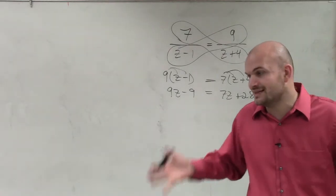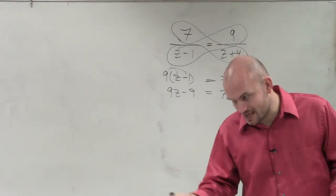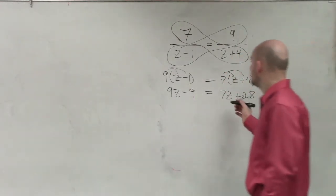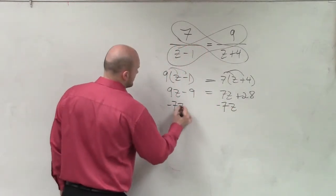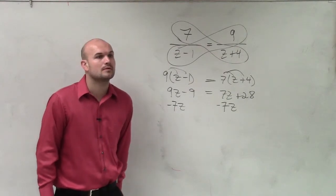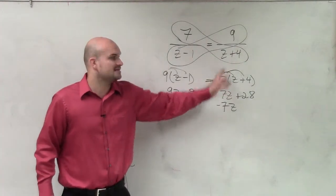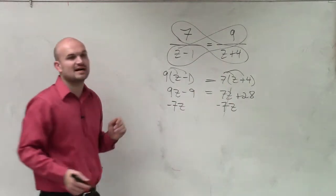Devin, we've got to make sure we get the z on the same side. So to do that, I'll subtract 7 times z. So now, I subtract because I'm going to get my z's on the left side.